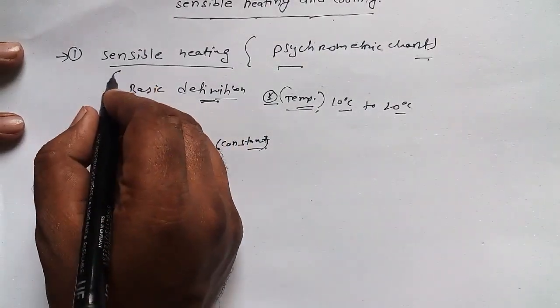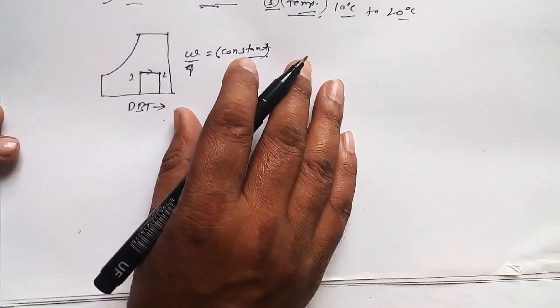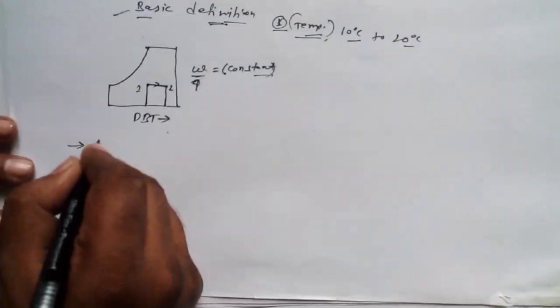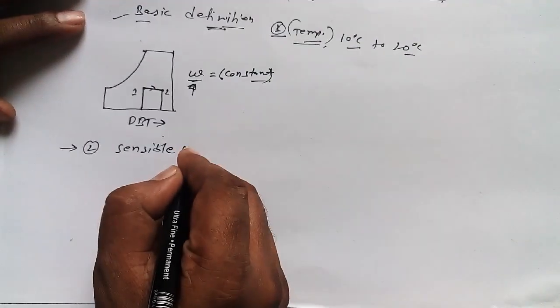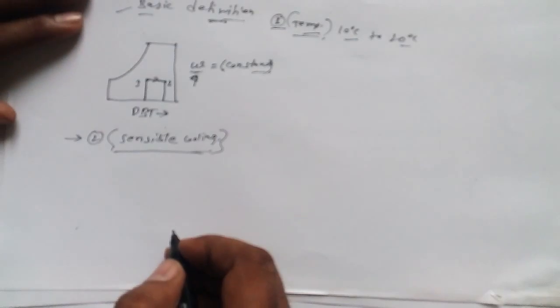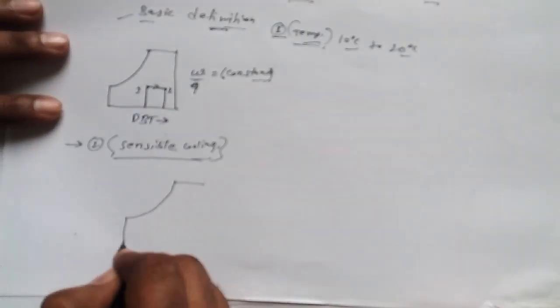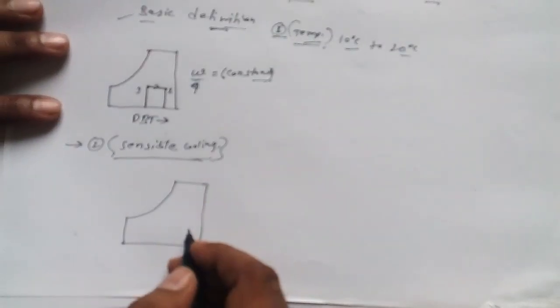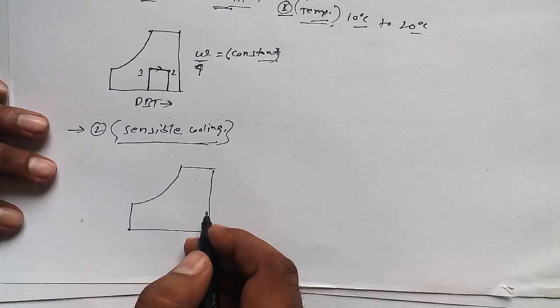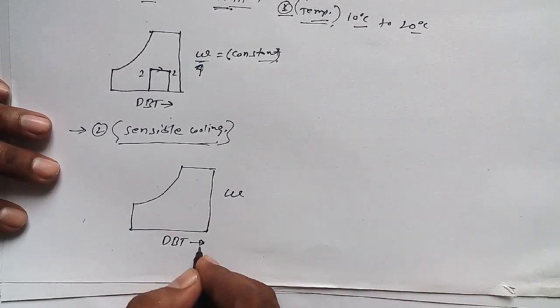Now I'll move to another concept, that is sensible cooling. Sensible cooling means we are decreasing the temperature of a system. For that, I'm going to draw a psychometric chart with specific humidity and DBT. Dry bulb temperature is increasing in this direction.